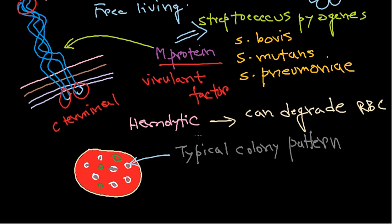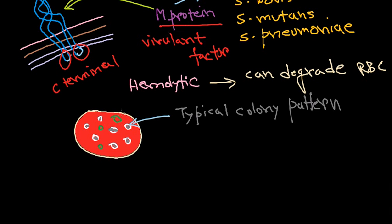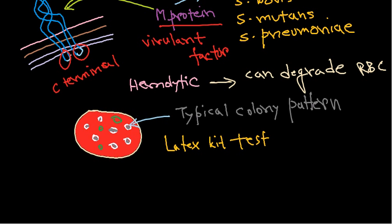Not all Streptococcus are hemolytic; Streptococcus pyogenes is one example of a hemolytic Streptococcus. There are other ways to identify Streptococcus — this bacterium is catalase positive, and there is also a test called the latex kit test. In this test, small latex particles are combined with the bacterial culture.